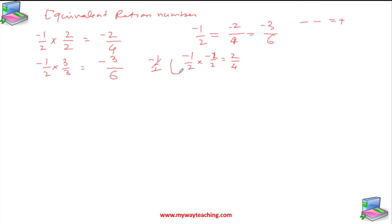When talking about equivalent rational numbers, if you multiply by minus 2 over minus 2, then minus times minus gives a positive result. But keep in mind, in a later video you will see that for minus 1/2, if you multiply by minus 2 over 2, the numerator becomes positive 2. The sign rules are: minus × minus = plus, plus × minus = minus, minus × plus = minus, plus × plus = plus.